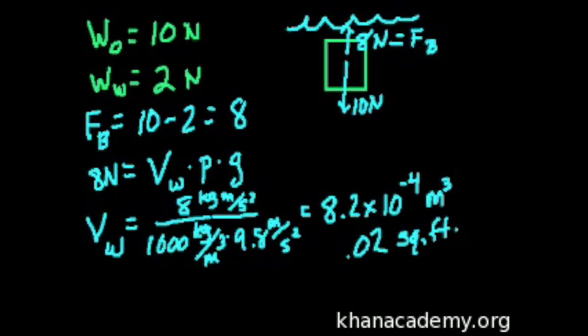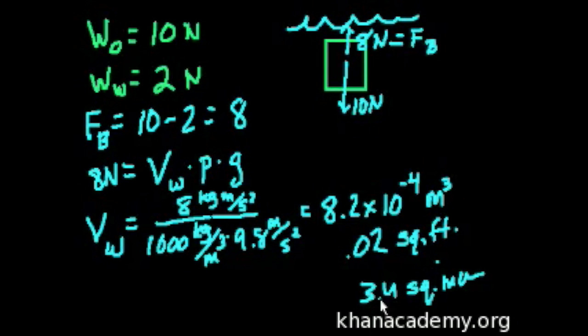And 0.02 square feet, in a square foot, there's 12 to the third power, which is 1728 times 0.02. So this is actually 34 square inches. So the object isn't as small as you may have thought it to be. It's maybe a little bit bigger than 3 inches by 3 inches by 3 inches. Anyway, let's do another problem.